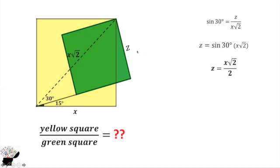From there we can find the areas of the yellow square and the green square. So the area of the yellow square is x², and the area of the green square is x²/2.